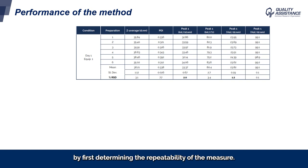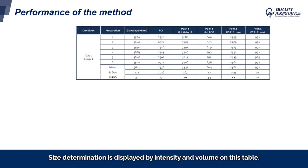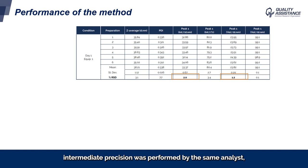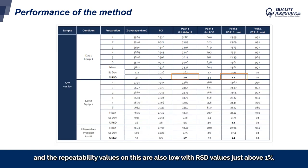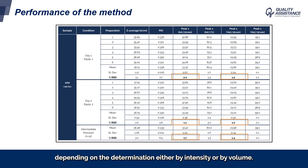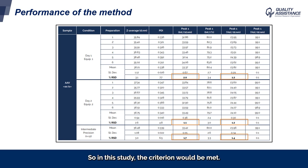Finally, we checked the performance of the method by first determining the repeatability. For one day on one equipment, the measurement was performed six times. Size determination is displayed by intensity and volume on this table. Circled in orange, we see low RSD values of 2% or 1.2% for determination by intensity or by volume. Intermediate precision was performed by the same analyst but on a second equipment and on a second day, with the measurement performed six times as well. The repeatability values are also low, with RSD values just above 1%. The intermediate precision determined from these 12 measurements also shows good results, with RSD values of 1.7% or 1.4%, depending on whether determination was by intensity or by volume. For a validation study, criteria on intermediate precision are usually set at 10%, so in this study the criterion would be met.